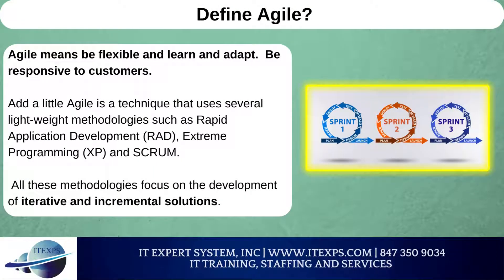Define Agile. Agile means be flexible, learn, and adapt. Be responsive to customers. Agile is a technique that uses several lightweight methodologies such as rapid application development, extreme programming, and Scrum. All these methodologies focus on the development of iterative and incremental solutions.